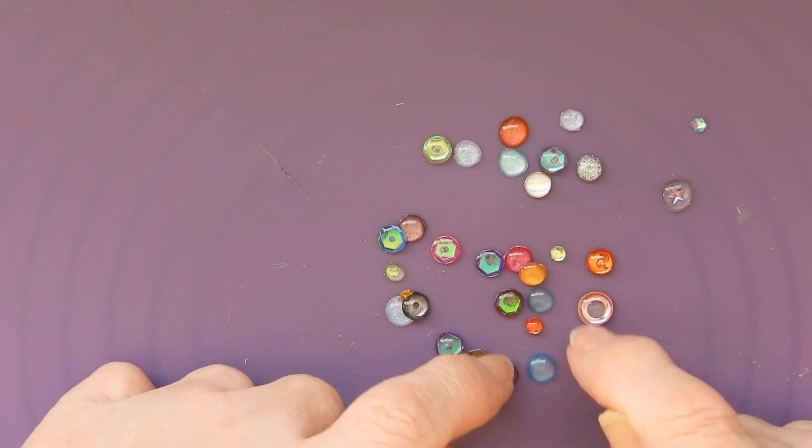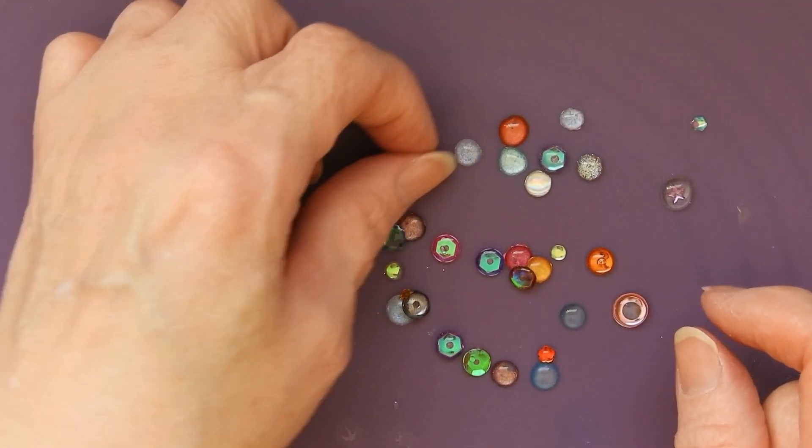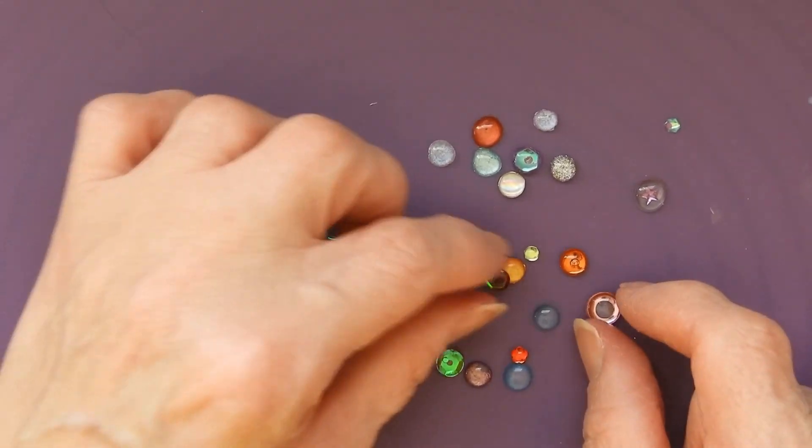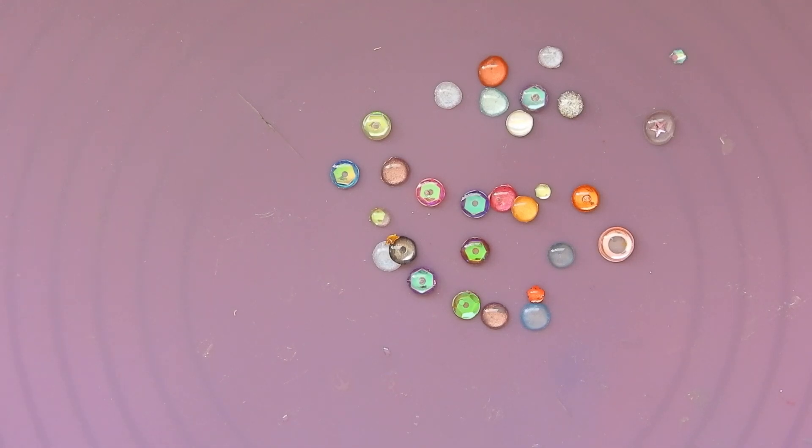So if there are any particular colors of gems that you would like that you haven't got, you can do it. Now, the other thing which I was really surprised and I almost forgot to mention is the fact you can do it with alcohol markers.